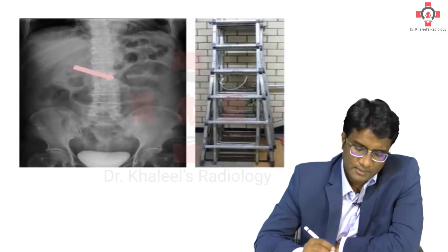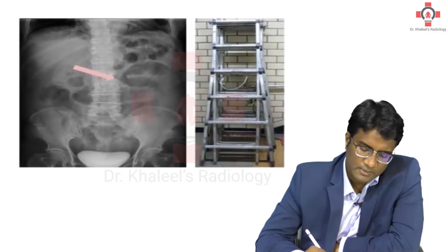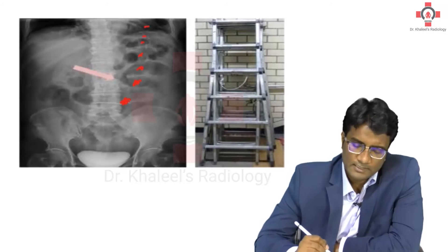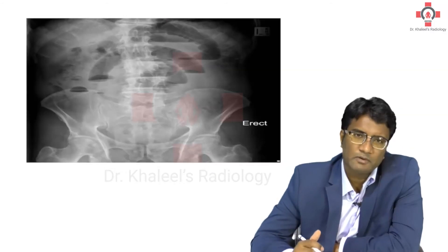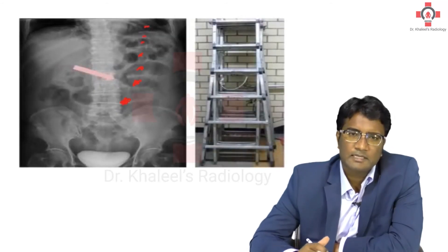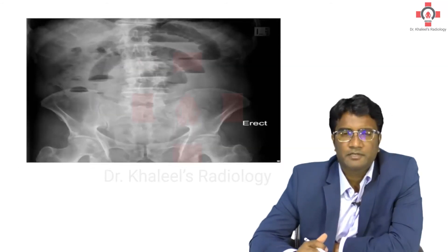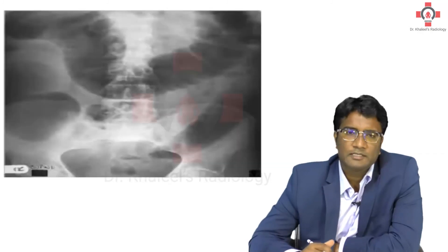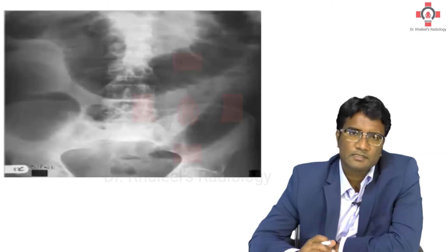Please look at this image. You can see the bowel loops present one above the other — this is called the step ladder pattern. When you see bowel loops stacked one above the other like this, that is the step ladder pattern, which is a feature of small bowel obstruction.